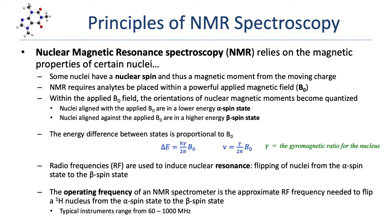The technique of NMR requires that the analytes be placed in a powerful applied magnetic field called B0. Within that applied B field, the orientations of the nuclear magnetic moments of all those nuclei become quantized into two possible states. Nuclei with their magnetic moments aligned with the applied B field are in a lower energy alpha spin state, and nuclei with their magnetic moments aligned against the applied B field are in a higher energy beta spin state.